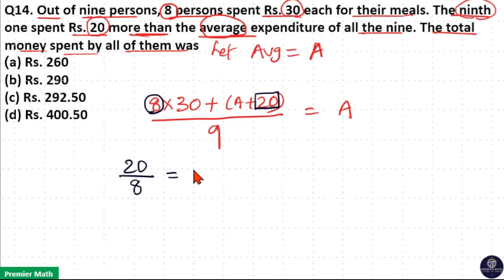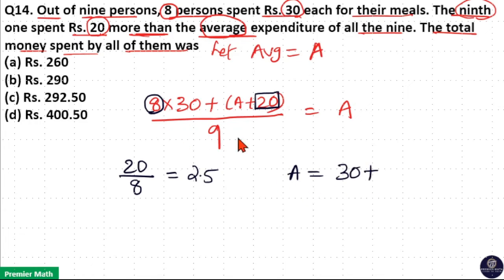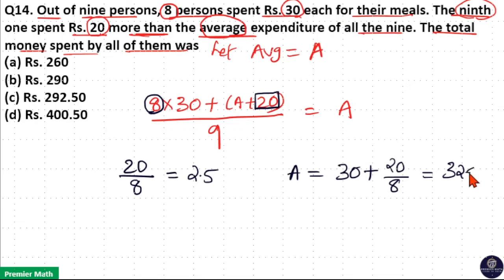20 by 8 is equal to 2.5. So if I distribute Rs. 2.5 to the 8 people, that will be equal to the average. So average is equal to money spent by the 8 people, which is 30, plus extra money spent by the 9th person, 20, divided by 8. So 30 plus 20 by 8 is equal to 32.5. This is equal to the average.